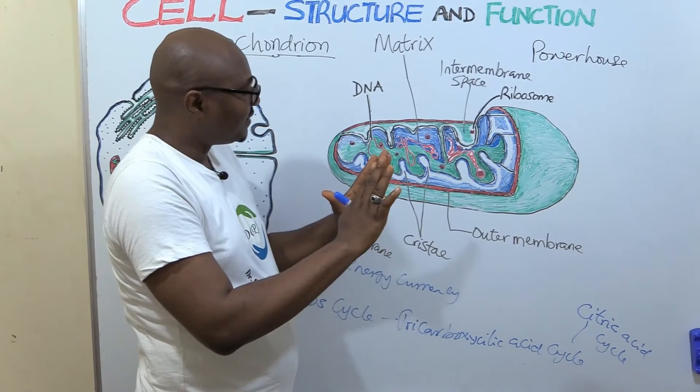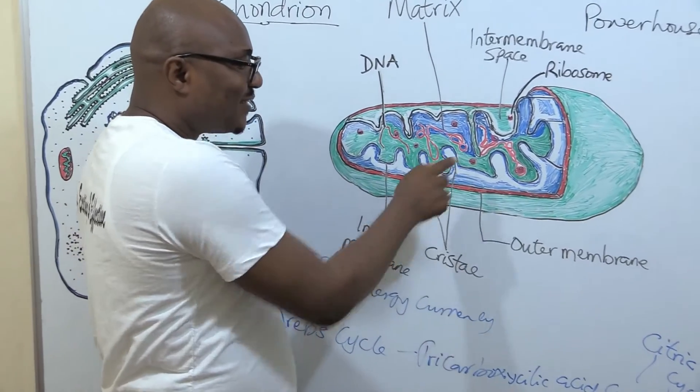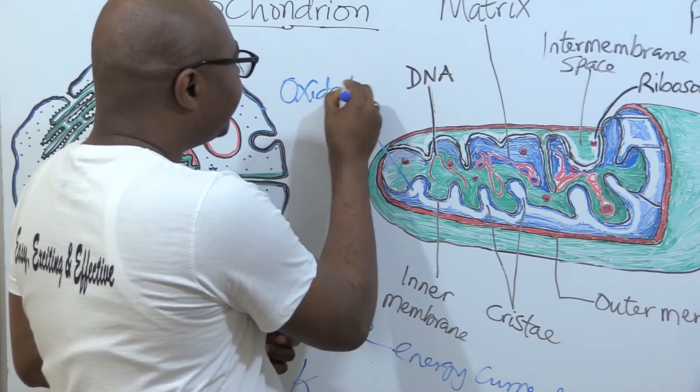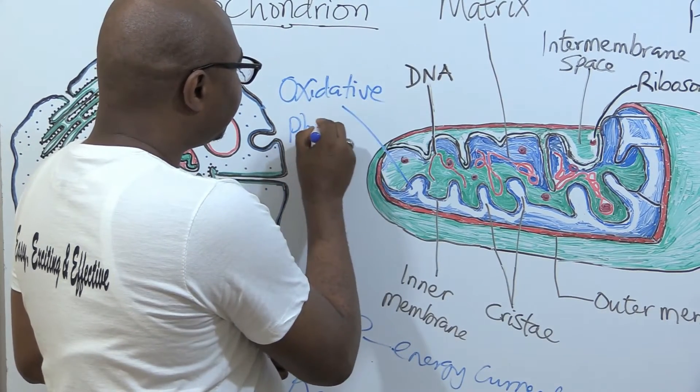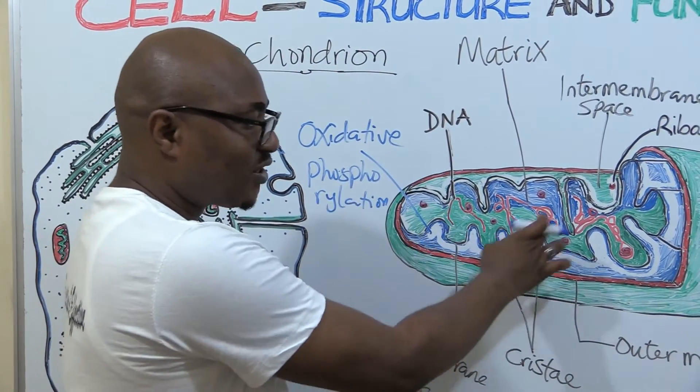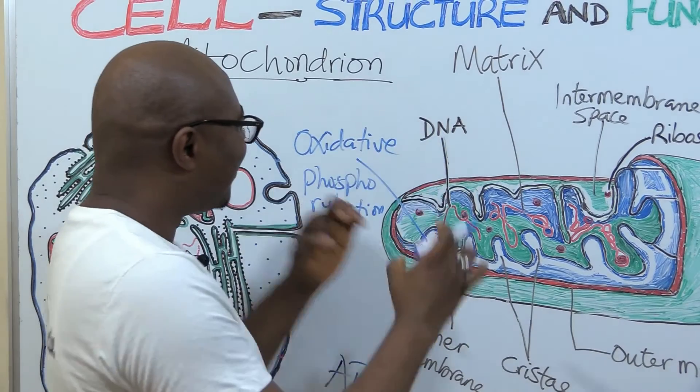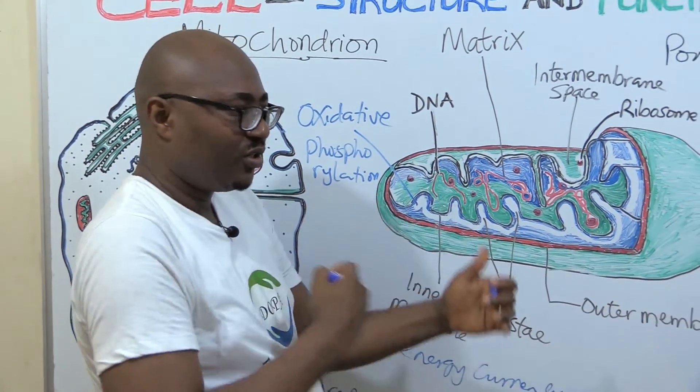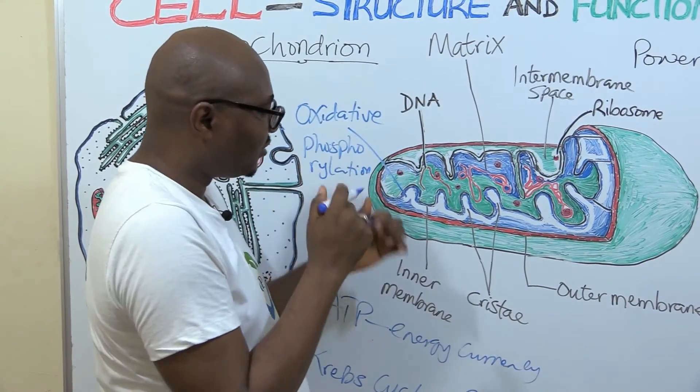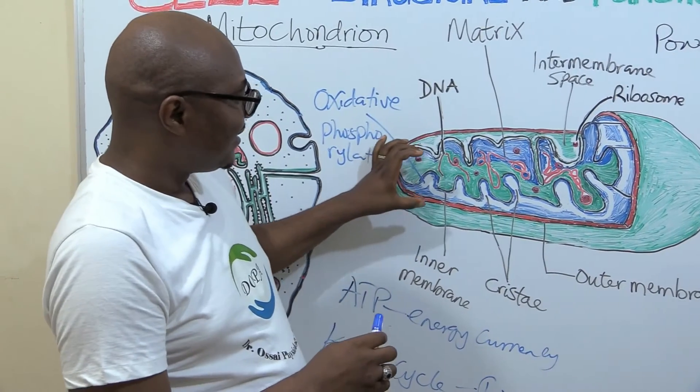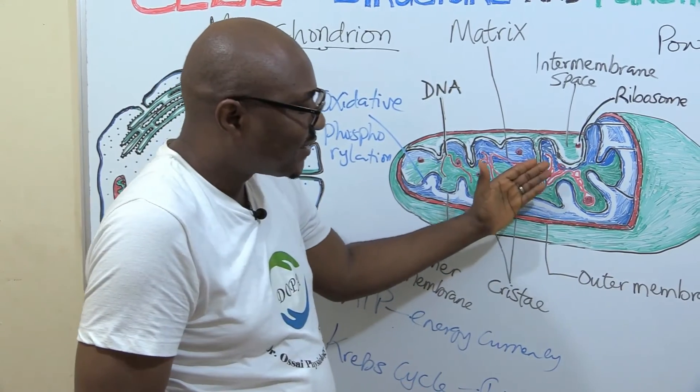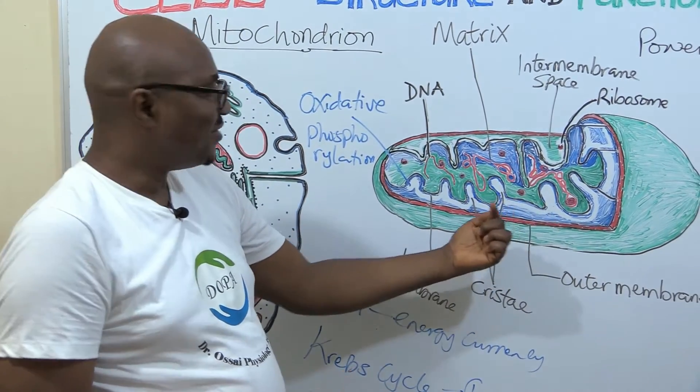The reaction that happens in the cristae is called oxidative phosphorylation. It happens in these cristae. It's just talking about the fact that you need oxygen - it uses oxygen to add phosphate to certain chemical compounds.